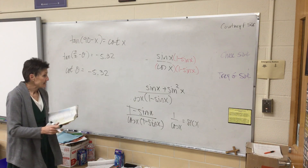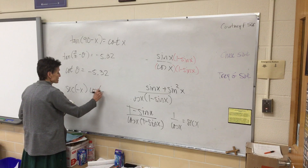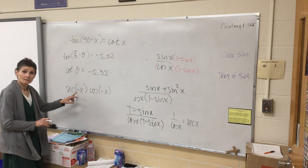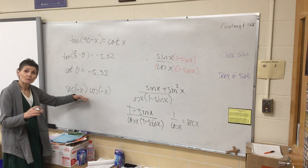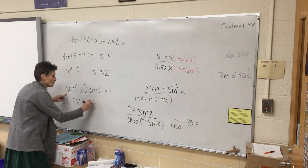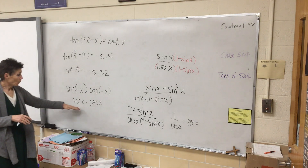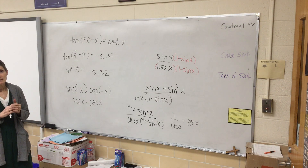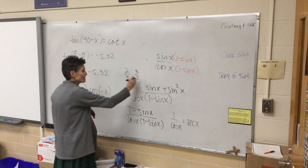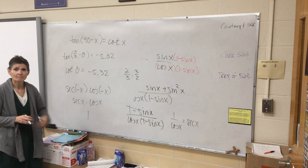Number 18 says secant of negative x times cosine of negative x. First, what happens to these negatives? Secant and cosine are the two even functions, so secant of negative x is just secant x, and cosine of negative x is just cosine x — the negatives are disregarded. Now, secant and cosine are reciprocals. When you multiply reciprocals — like two-thirds times three-halves — you get one. So the answer is one.